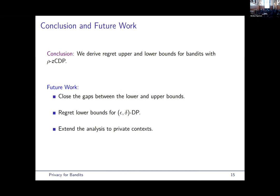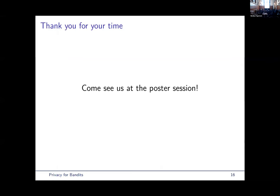So, to conclude, we study zero-concentrated DP for bandits. We derive regret upper and lower bounds, and for future work, we'd like to close the logarithmic gap between the upper and lower bounds, generalize our regret lower bounds also for epsilon-delta DP that are still missing in the literature, and also extend the analysis to the case when the contexts are also private. Thank you for your attention, and I'm happy to take questions.